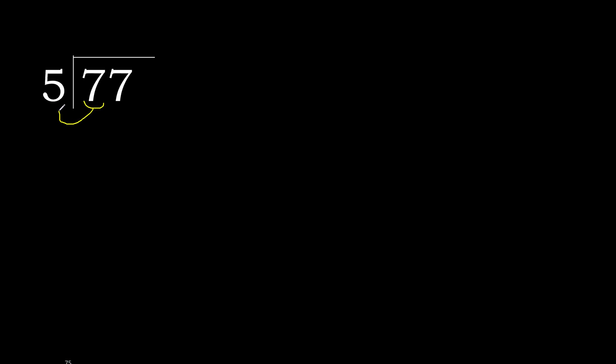77 divided by 5. Starting with 7: 5 multiplied by which number is nearest to 7 but not greater? 5 multiplied by 2 is 10 — that is greater. 5 multiplied by 1 is 5 — 5 is not greater. 7 minus 5 is 2.